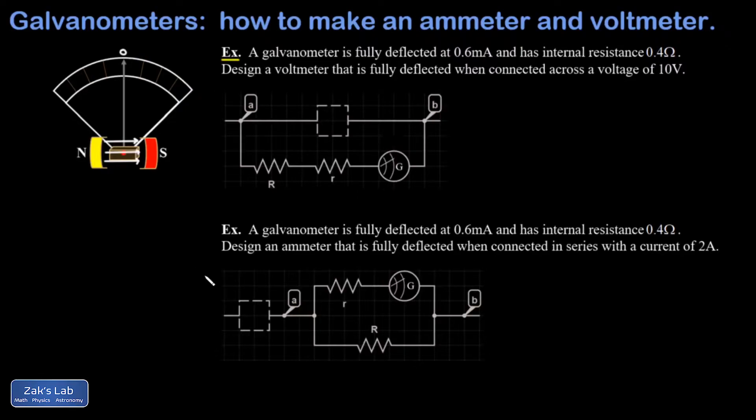In our two examples, we're going to look at how to use a galvanometer to make a voltmeter and how to use it to make an ammeter. In each case, the galvanometer has the same specs.